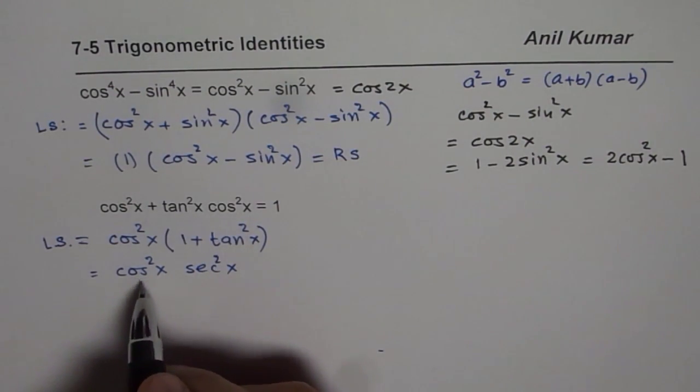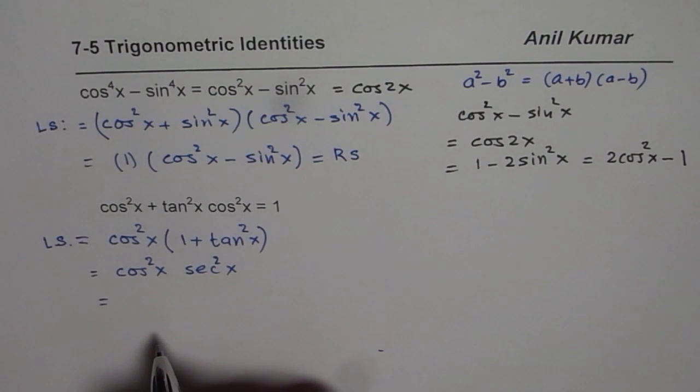Perfect. Now cos square x and secant square x when you multiply what do you get? You get 1.